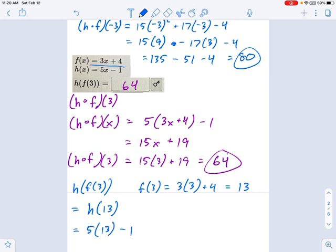So what do we get here? This is 5 times 13 minus 1. Remember the equation, h of x, right there. So 5 times 13 is 65 minus 1, which gives me 64. So whichever method you like, go ahead and do that method.